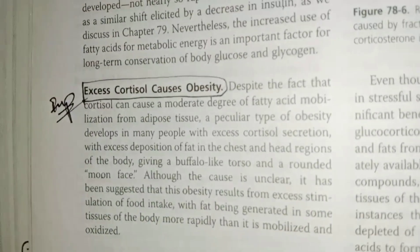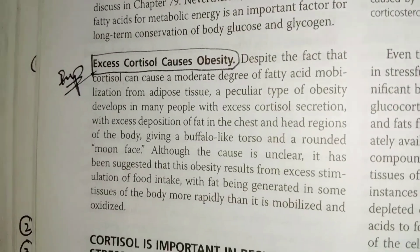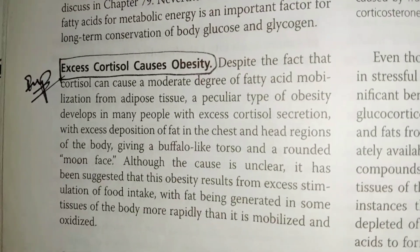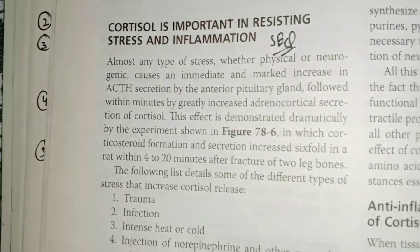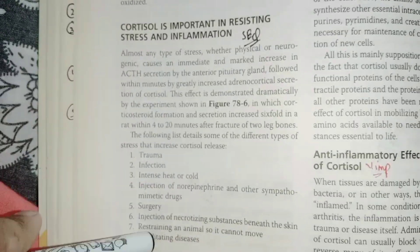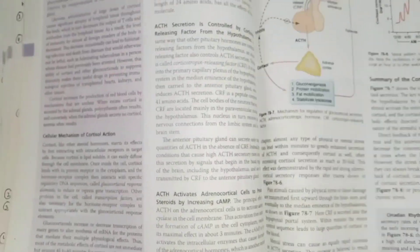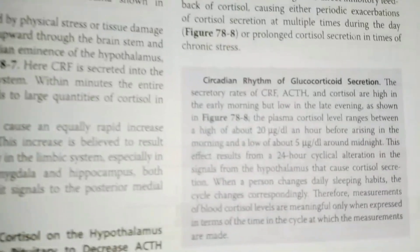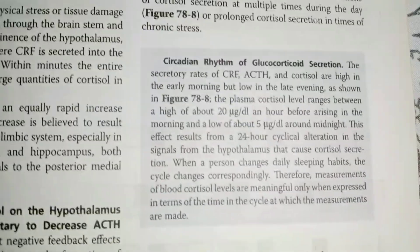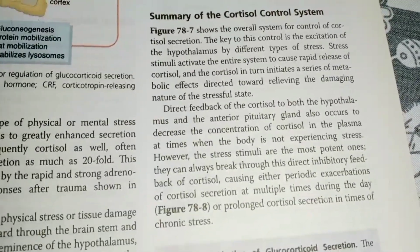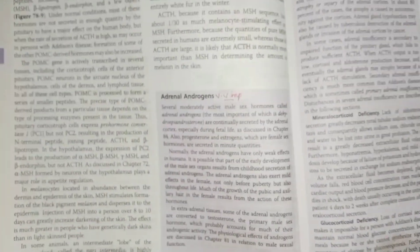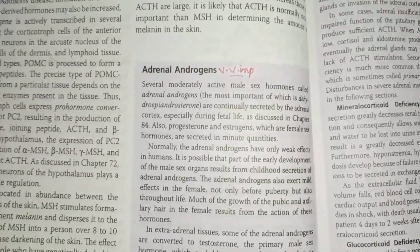Next, you will need to prepare cortisol and obesity. After that, you will need to cover the importance of cortisol for corticosis and prepare for the participating process. We have to check the part on the role of cortisol — take a look at the end of the chapter.